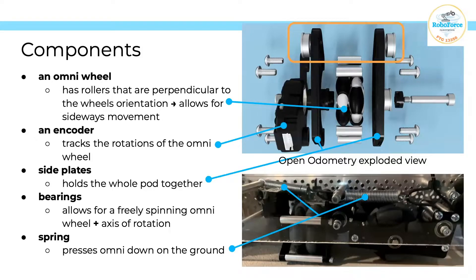The main components of an odometry pod: the omniwheel — we choose an omniwheel because it has rollers perpendicular to the wheel's orientation, so when the robot strafes or moves sideways those rollers move with the robot without affecting its sideways movement. There's also the encoder, which tracks the rotations of the omniwheel. The side plates hold the whole pod together for good structural integrity. The bearings allow the dead wheel omniwheel to move freely around the axle. And finally, the spring presses the omniwheel toward the ground for even contact and good data accuracy.